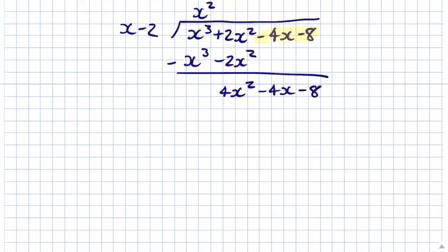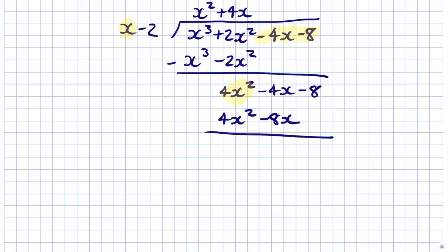Next, x goes into 4x² giving +4x. Multiply 4x by (x - 2): 4x × x = 4x² and 4x × (-2) = -8x. Subtract: 4x² - 4x² = 0, and -4x - (-8x) = -4x + 8x = 4x. Bring down the -8, giving 4x - 8.